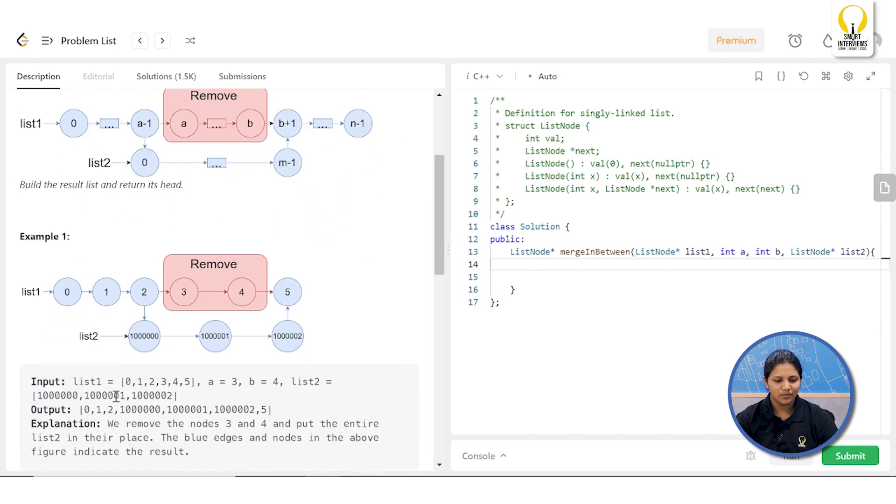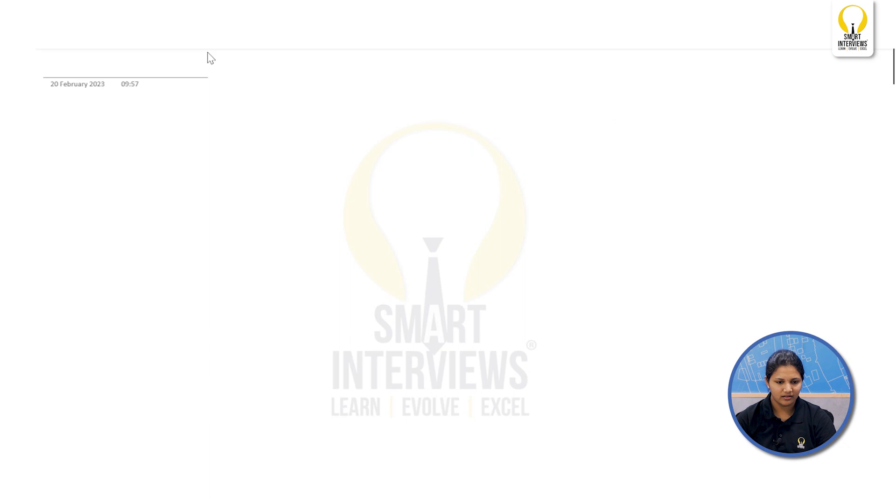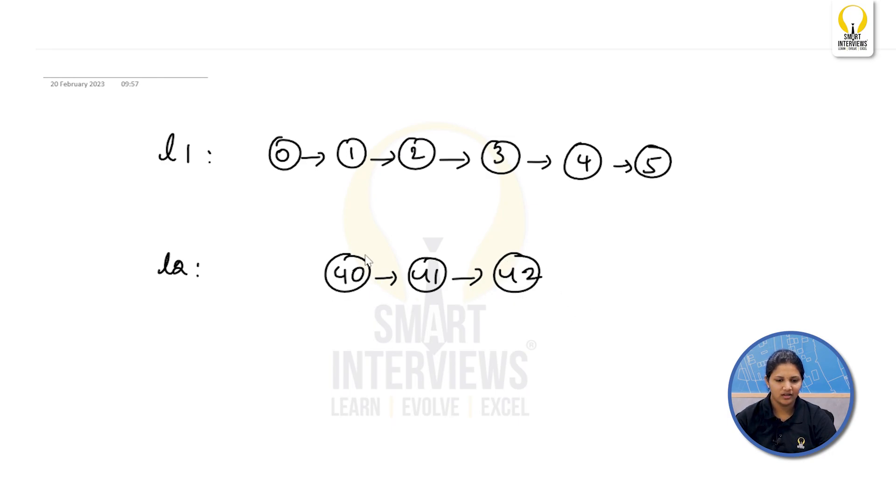Let's go through an example. Let me take a random example here. Let's say that this is your list one, something like 0, 1, 2, 3, 4 and 5. And maybe this is your list two, I can say 40, 41 and 42. You are given two values, A is 3 and B is 4. According to the question, you have to remove the nodes from 3 to 4 in list one. And in this place, you have to insert this list.